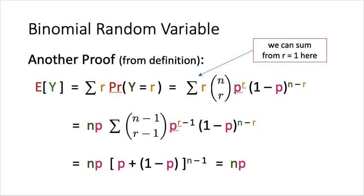Alternatively, we can prove it based on the definition of expected value. The expected value of Y is by definition the summation over all possible values r, multiplied by the probability that Y equals r. Substituting the binomial formula gives us n choose r times p to the r times 1 minus p to the n minus r. Since the r equals 0 term contributes zero, we sum from r equals 1. The r can then cancel with the r factorial in n choose r, using the identity r times n choose r equals n times n minus 1 choose r minus 1.